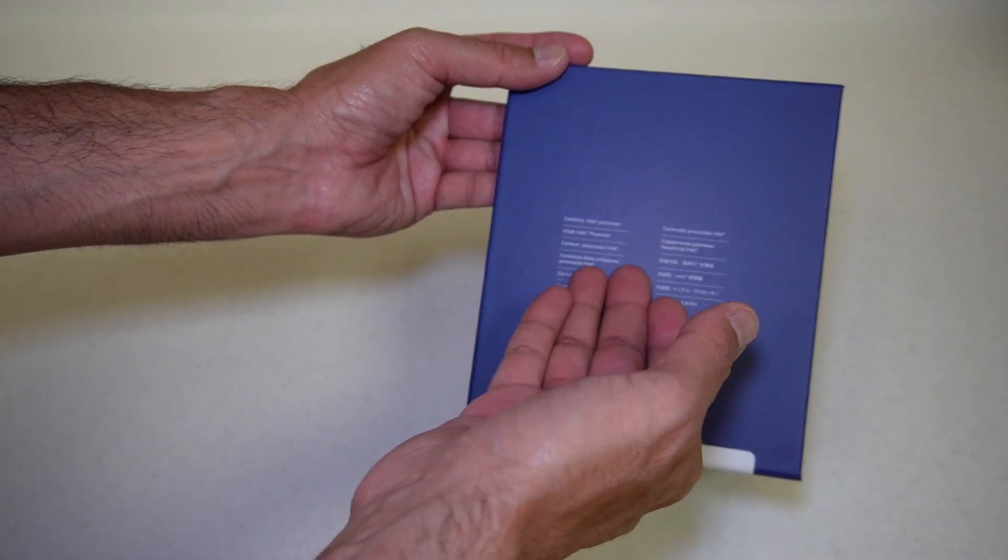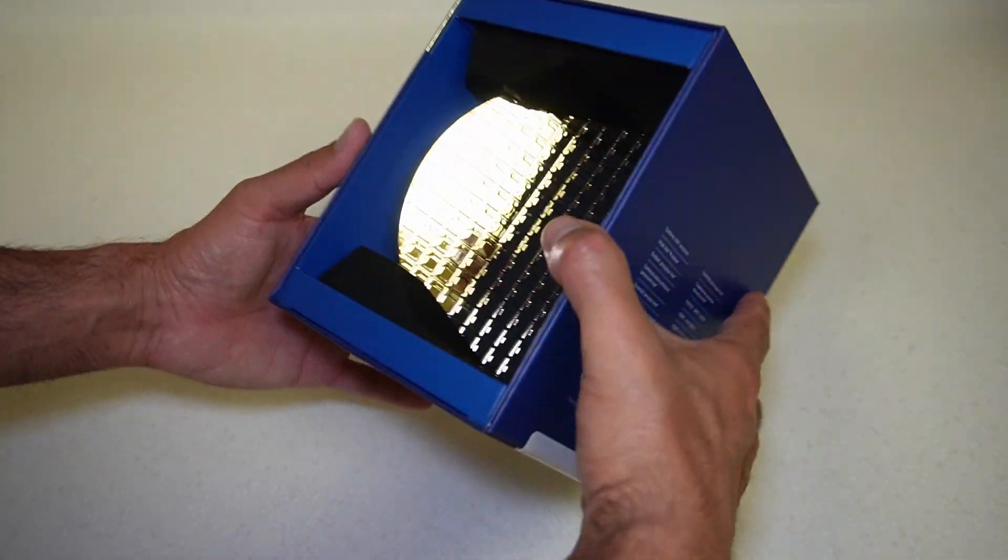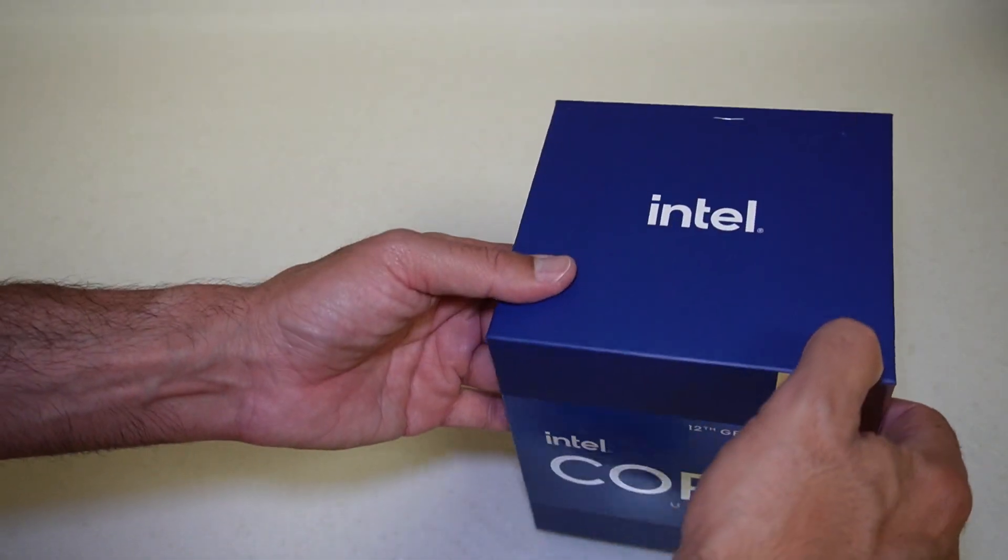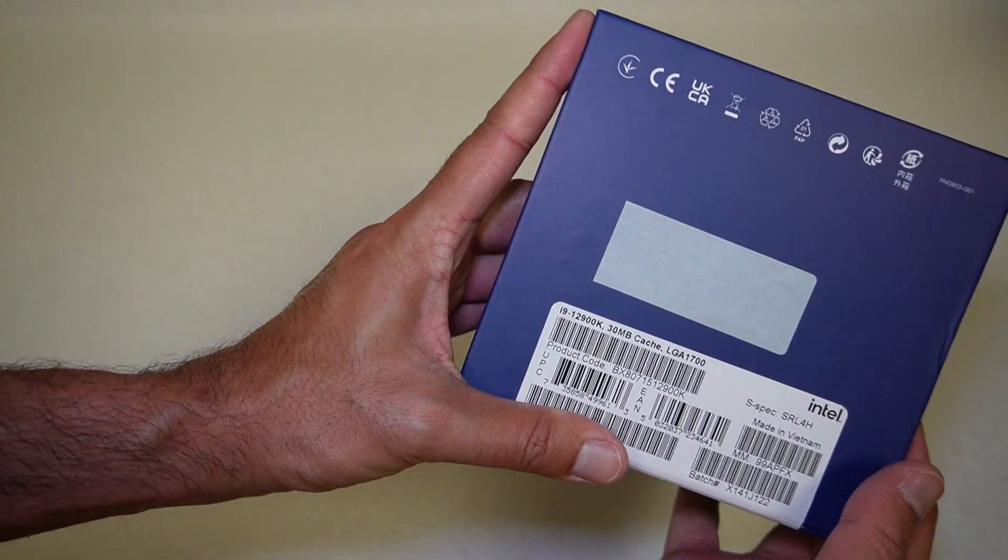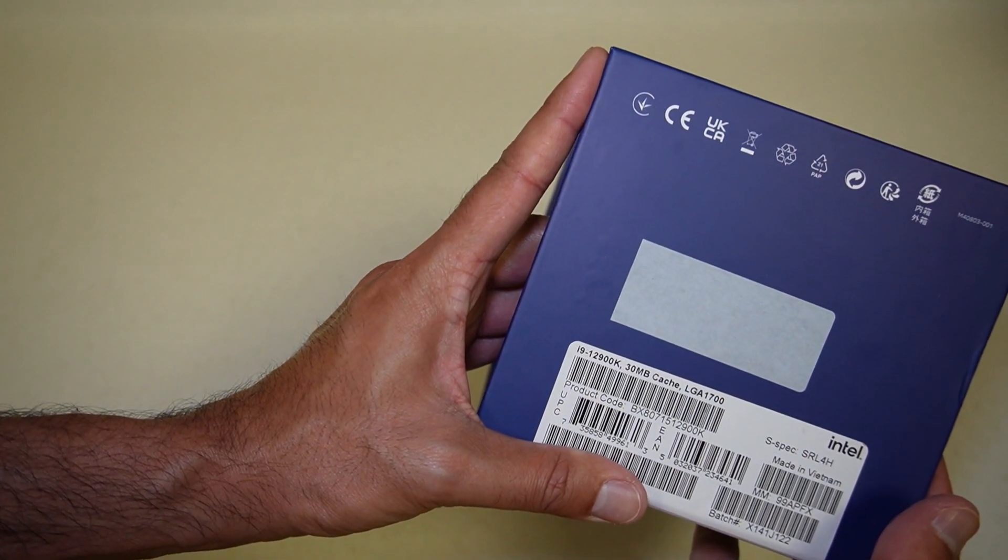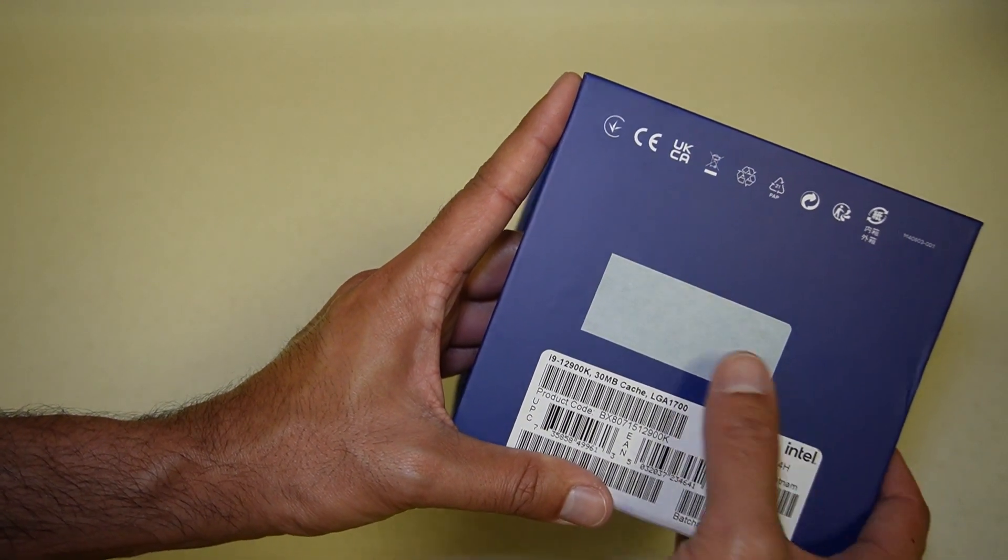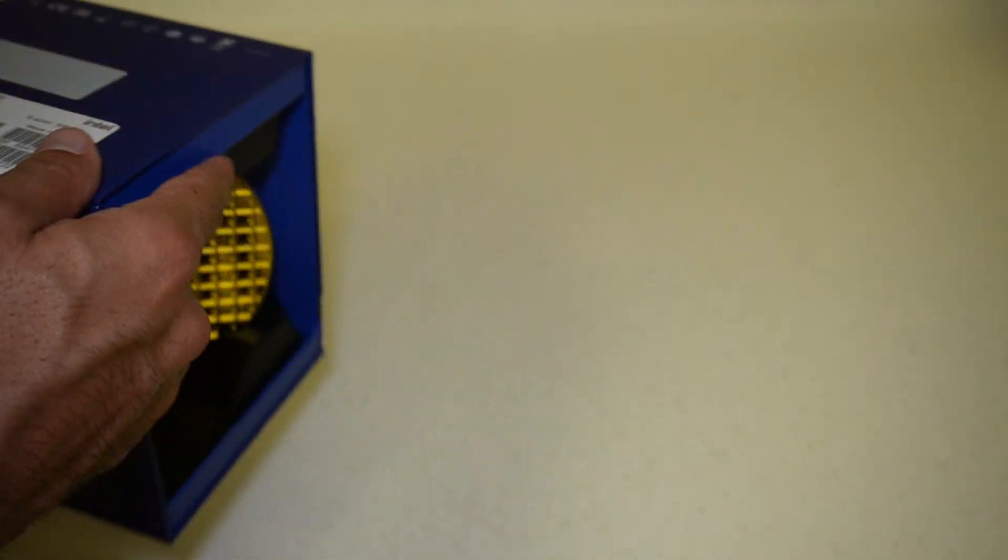On the back it confirms that it's an Intel processor. On the other side we see the other side of the i9 Intel logo, and on the underside we have the seal and the label which clearly states that this is a 12900K, 30MB cache. I'm not sure what that sticker is, I'll try and find out.